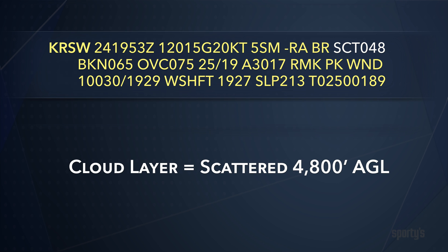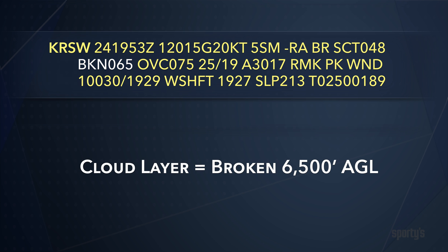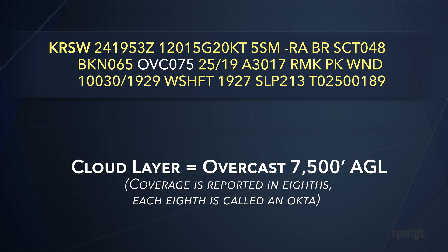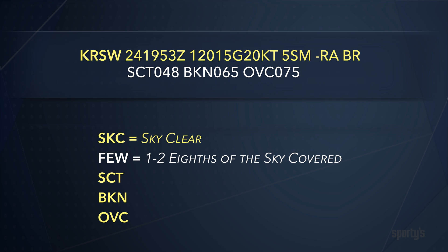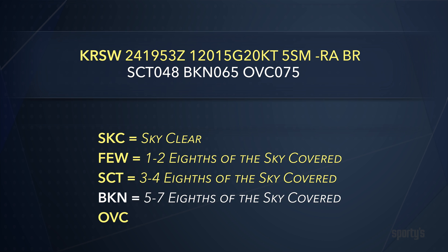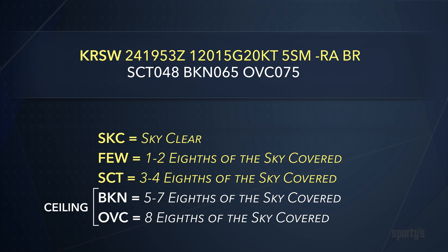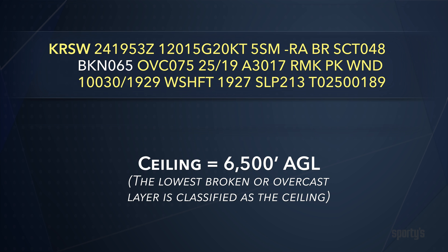In our sample METAR from Fort Myers, there is a scattered layer of clouds at 4,800 feet above ground level, AGL for short. A second broken layer of clouds at 6,500 feet, and an overcast cloud layer at 7,500 feet. Coverage is reported in eighths of sky coverage — each eighth is sometimes called an octa. Sky cover contractions: SKC translates to sky clear; few indicates one to two-eighths; scattered, abbreviated SCT, means three to four-eighths; broken, shortened to BKN, is five to seven-eighths; and OVC, meaning overcast, is eight-eighths, or complete sky coverage. Only the lowest broken or overcast layer is considered to be a ceiling. At Fort Myers, the ceiling is at 6,500 feet.